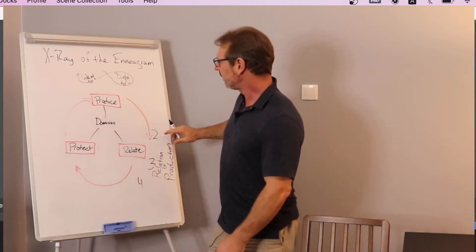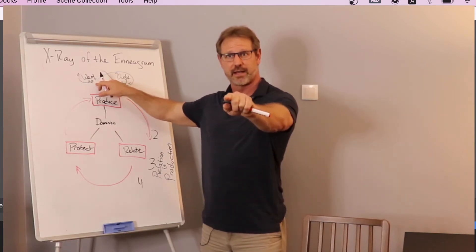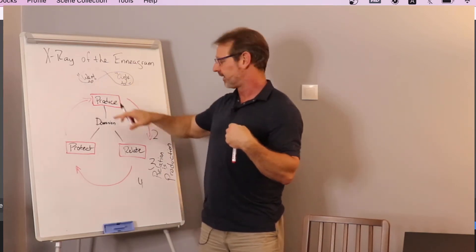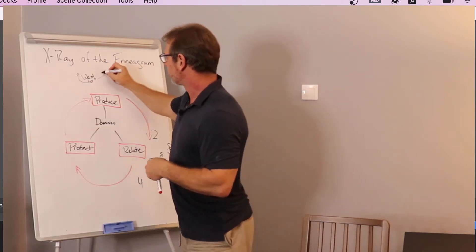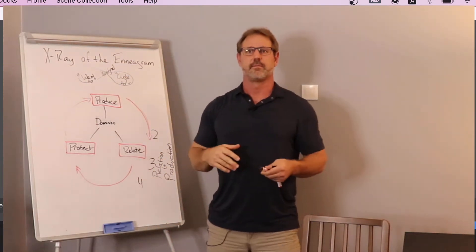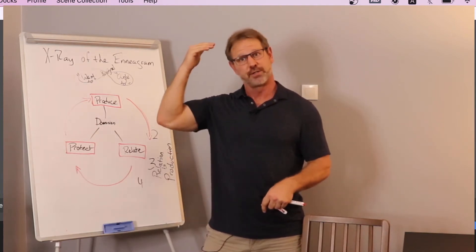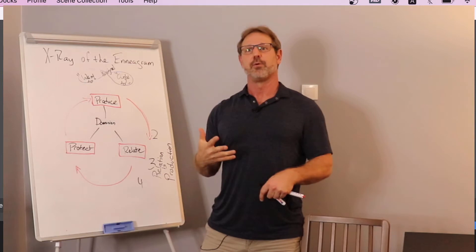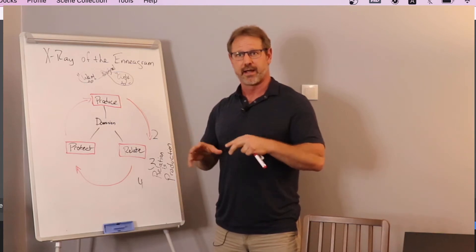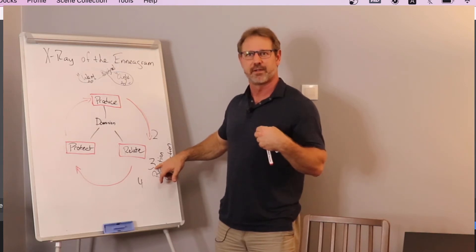And in between what you get in each of the primary, the center types is a kind of resigned response. It's just like, this is just how it is. There's nothing you can do about it. You're just going to deal with it, work with it, to whatever the central problem is. And so with two, you have this: I want connection. So what I'm going to do is I'm going to find what you need and I'm going to produce it so then you'll connect.